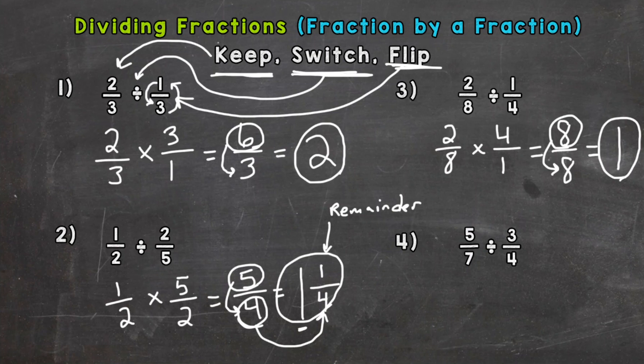So number four, we have five sevenths divided by three fourths. So steps: keep, switch, flip. Five times four is 20. And seven times three is 21. Now that's a proper fraction. We have a numerator that is less than the denominator. So we can see if we can simplify that fraction, but actually the only common factor, the greatest common factor between 20 and 21 is one. So this fraction is simplified. We are done. 20 over 21.